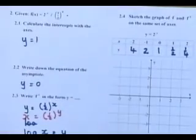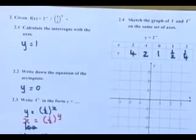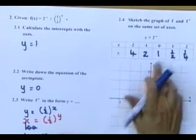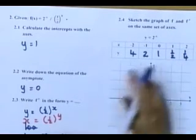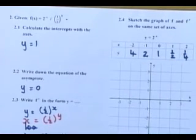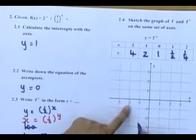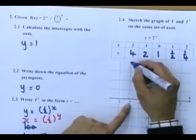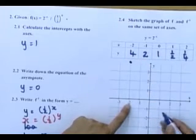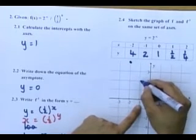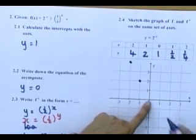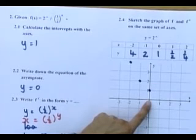Back to our sketch. It's where they ask you now: sketch again the graph of f and f to the power minus 1 on the same set of axes. Now, plotting these points, once again, we're going to say if x is minus 2, y is equal to 4. If x is minus 1, y is equal to 2. If x is 0, y is equal to 1.